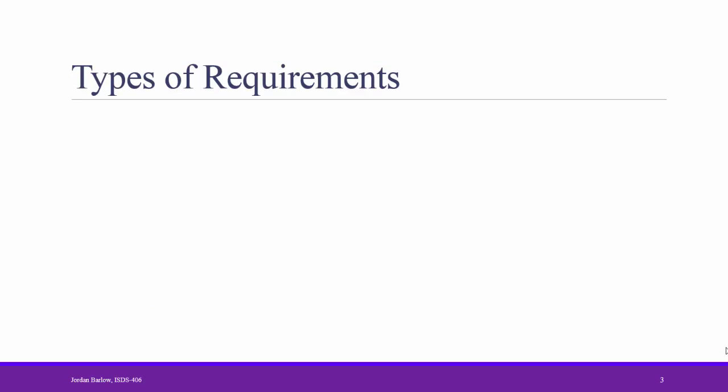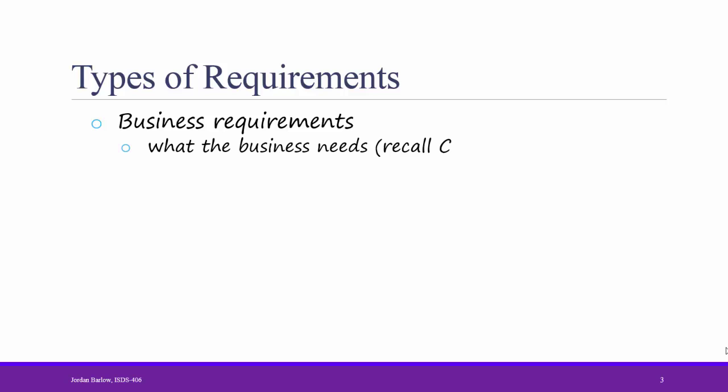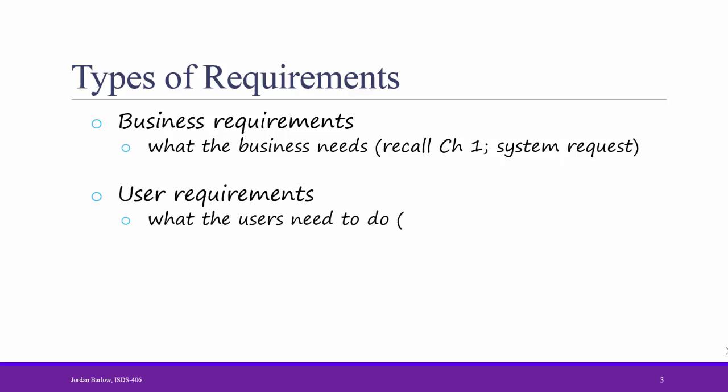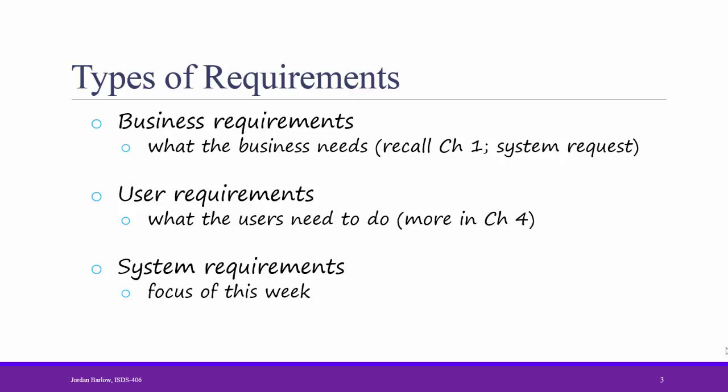There are many different types of requirements. Business Requirements, if you'll recall from Chapter 1 and the system requests that you prepared, are what the business needs from the system. User Requirements are what the user needs to be able to do, and we'll talk more about those in Chapter 4. The third main type of requirement is System Requirements, which is the focus of this week. Understanding the difference between all these different types of requirements, as well as being able to accommodate all of them, is key for an analyst job to be successful. On Titanium, I've posted a link to an article that more clearly explains the practical importance of understanding the difference between these types of requirements.